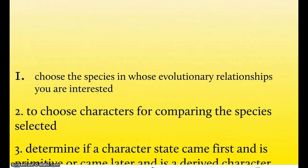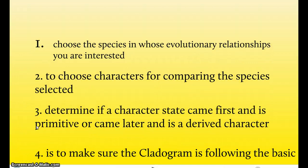The first step is to choose the species in whose evolutionary relationships you are interested in. The second step is to choose characters for comparing the species selected. So, remember how in our last cladogram, front limbs was a character. So, they would have to think of something like that.